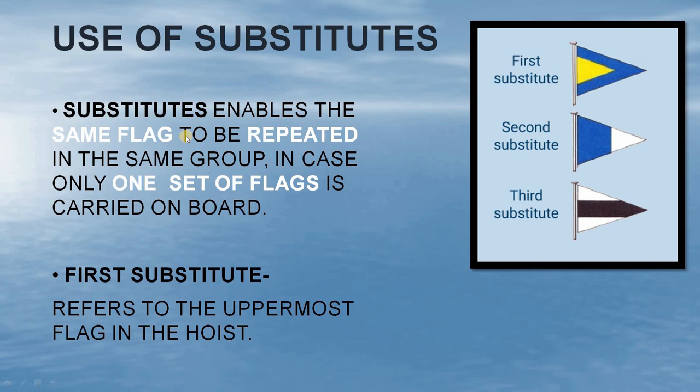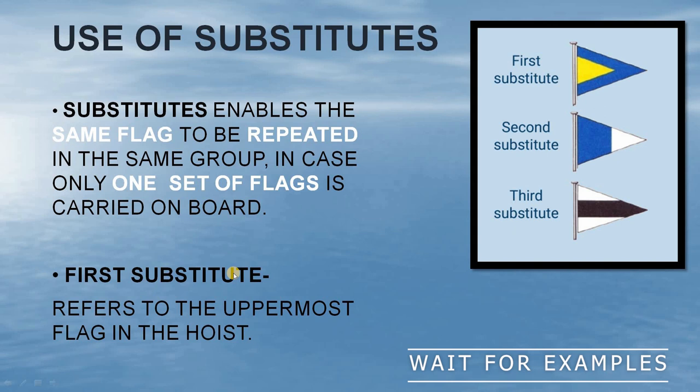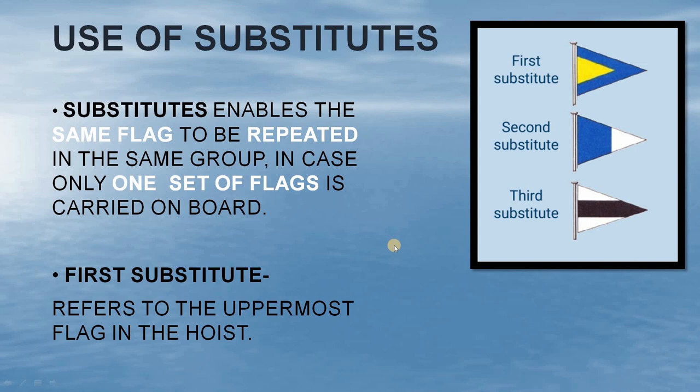First of all, we have the use of substitute flags. Substitutes enable the same flag to be repeated in the same group, in case only one set of flags is carried on board. The first substitute refers to the uppermost flag in the hoist. Similarly, the second substitute refers to the second flag in the hoist, and the third substitute refers to the third flag in the hoist. I'll explain this with the help of examples.